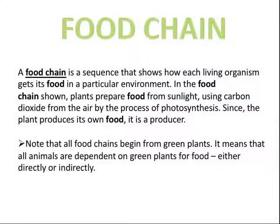Now let's move to our next topic: food chain. A food chain is a sequence that shows how each living organism gets its food in a particular environment. In a food chain, plants prepare food from sunlight using carbon dioxide from the air by the process of photosynthesis. Since the plant produces its own food, it is known as the producer.